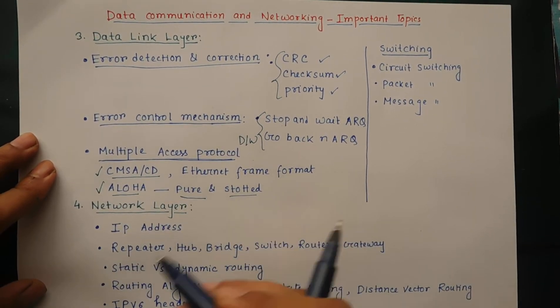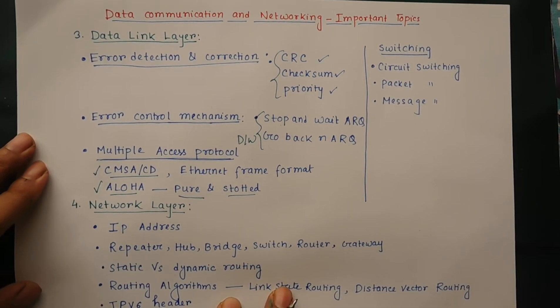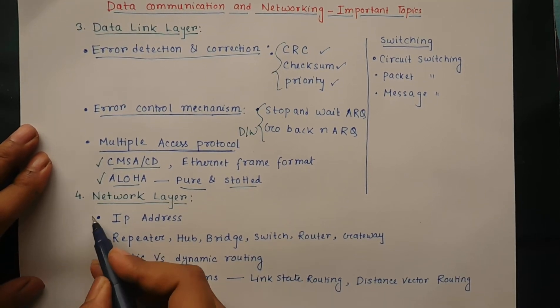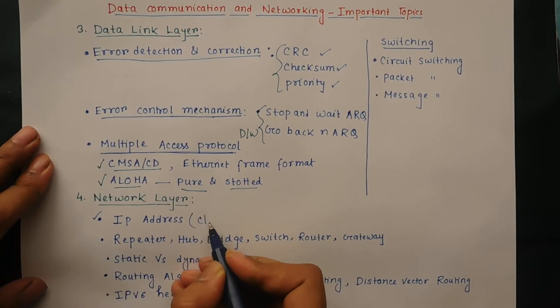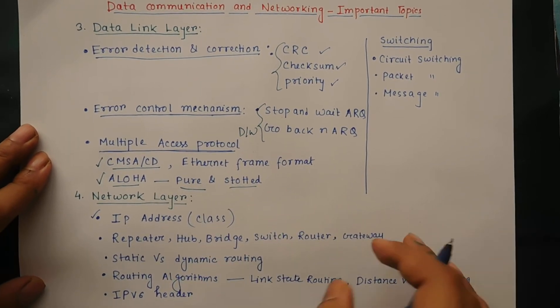The next layer is network layer. Here you have to read IP address, that means IP address classes: class A, B, C, and D.